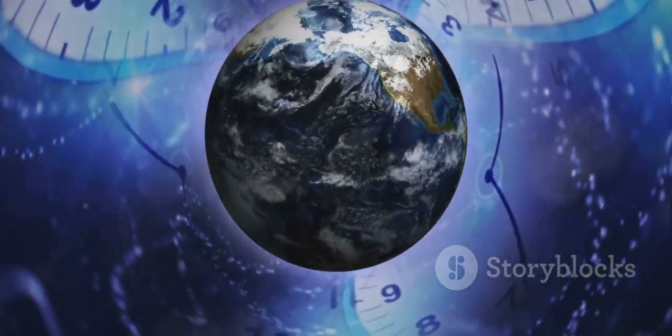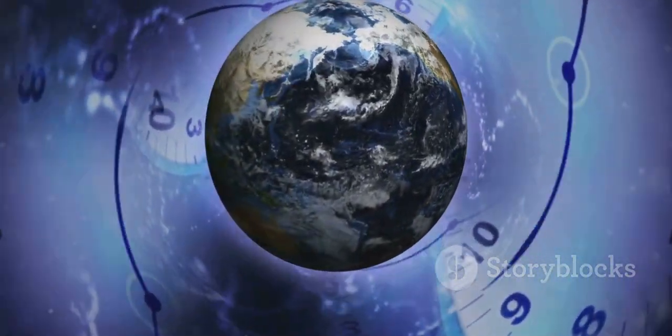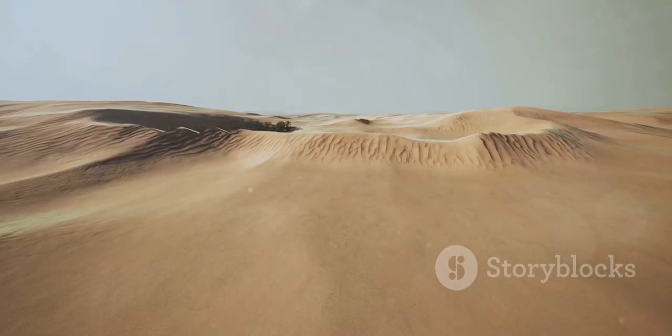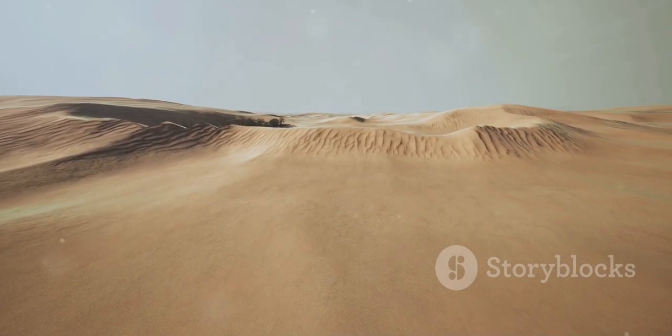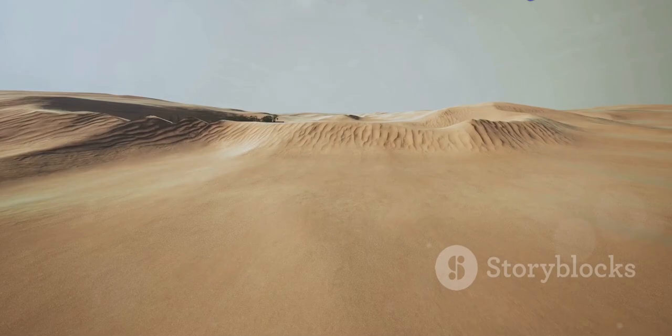If Earth were to become tidally locked, it would be a world of stark contrasts. One half would be perpetually bathed in sunlight, likely turning into a searing desert with extreme temperatures.